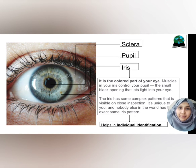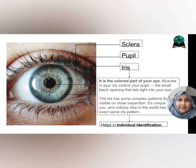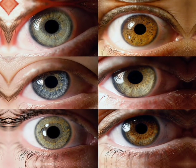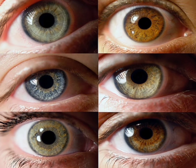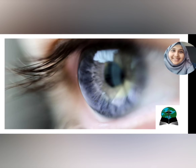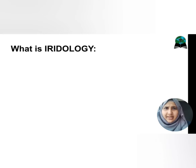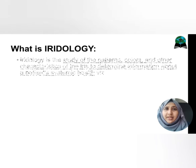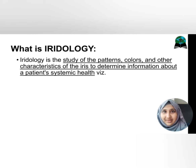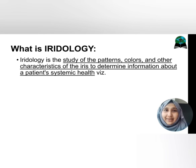The iris is developed from embryonic neuroectoderm. Is that it? Is it all about the intricately patterned tissue structure smaller than a dime? So my dear friends, let me introduce you to iris diagnosis, or iridology. Iridology is the study of patterns, colours and other characteristics of the iris to determine information about a person's systemic health.